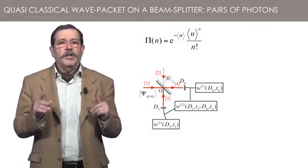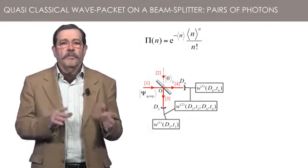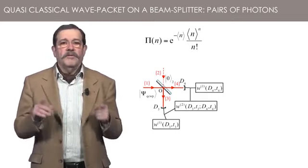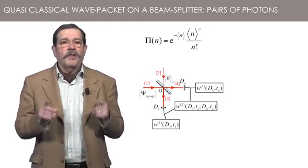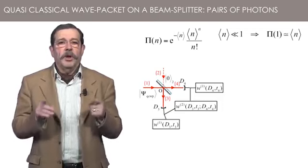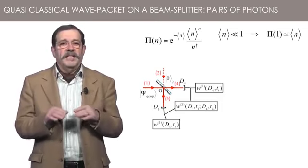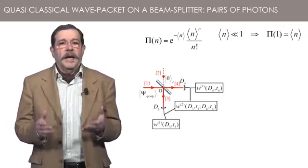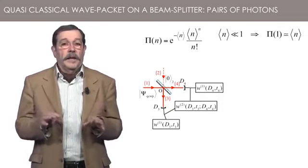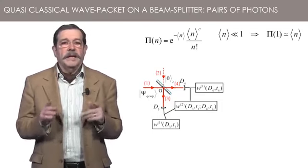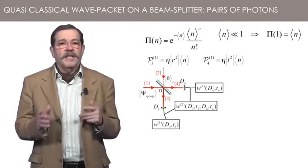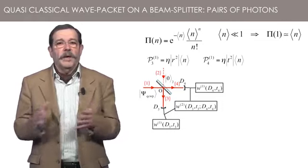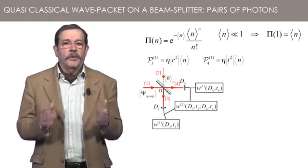If the average number of photons in the wave packet is small compared to 1, the expansion at the lowest order of the Poisson formula gives a probability to have 1 photon equal to the average number of photons. This photon is detected in output 3 or 4, with probabilities r squared and t squared. Taking into account the quantum efficiency eta, we obtain probabilities of single detection in each channel. They are identical to what we have calculated using the probability rates W1.